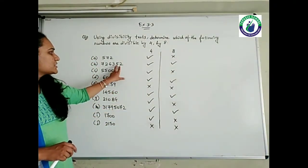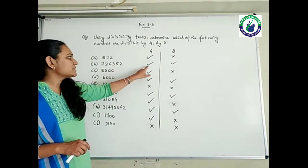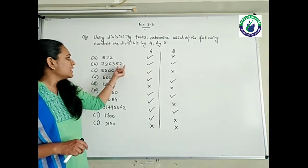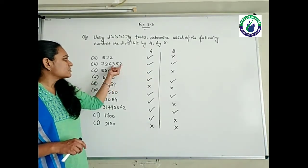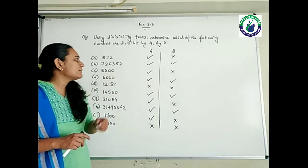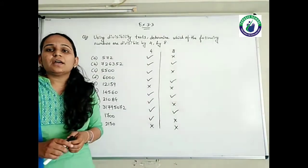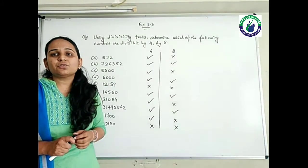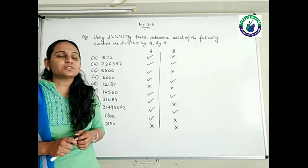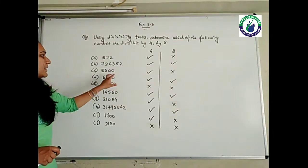Last two digits 52 — yes, it is divisible by 4. Last three digits 3, 5, 2 — it is divisible by 8. 8 fours are 32, and again 4 will come — 44 fours — 352 is there.